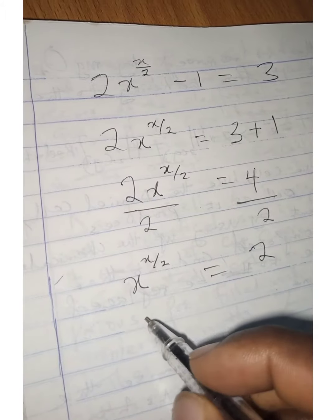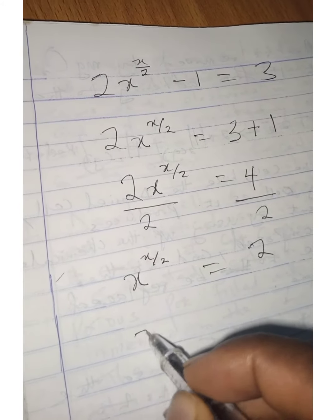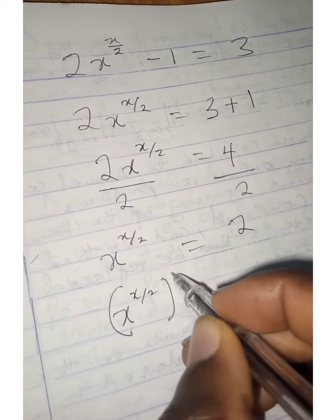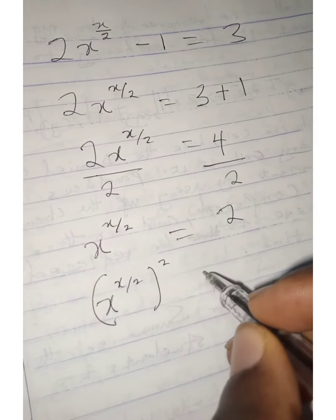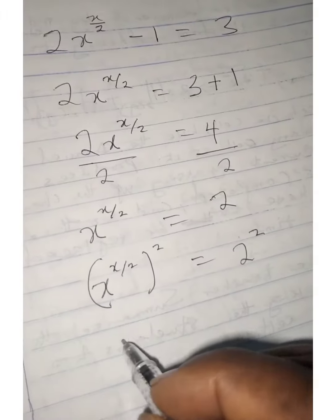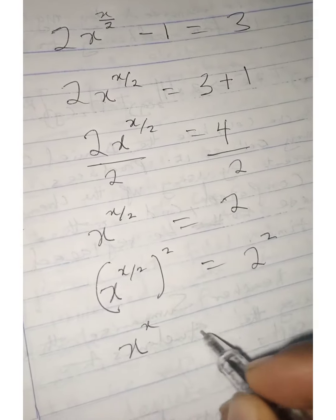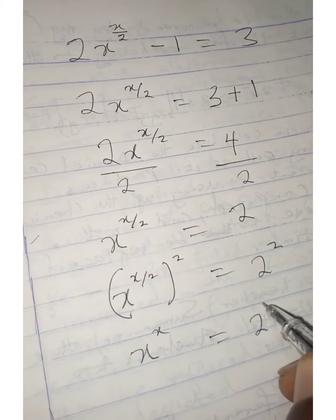We can multiply the power by 2. We're going to have x raised to the power x over 2 times 2, which equals 2 raised to power 2. Then we have x raised to power x equals 2 raised to power 2.